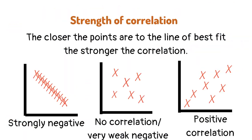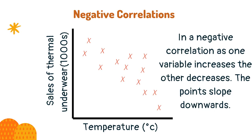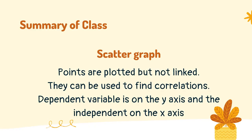The closer the points are to the line of best fit, the stronger the correlation. On a scatter graph, points are plotted but not linked. They can be used to find correlations. The dependent variable is on the y-axis and the independent variable is on the x-axis.